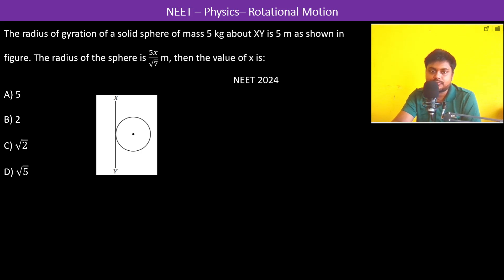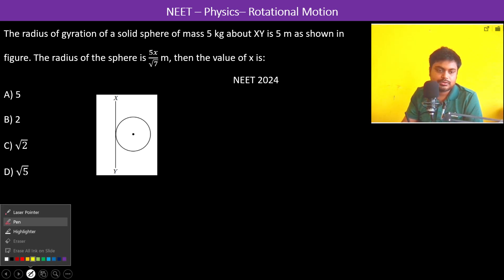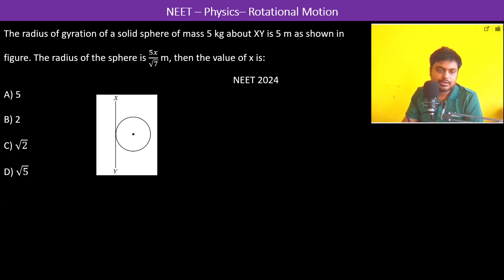The moment of inertia of a solid sphere of mass 5 kg about axis XY is 5 meters, as shown in the figure. The radius of gyration of the sphere is given, and we need to find the value of x.